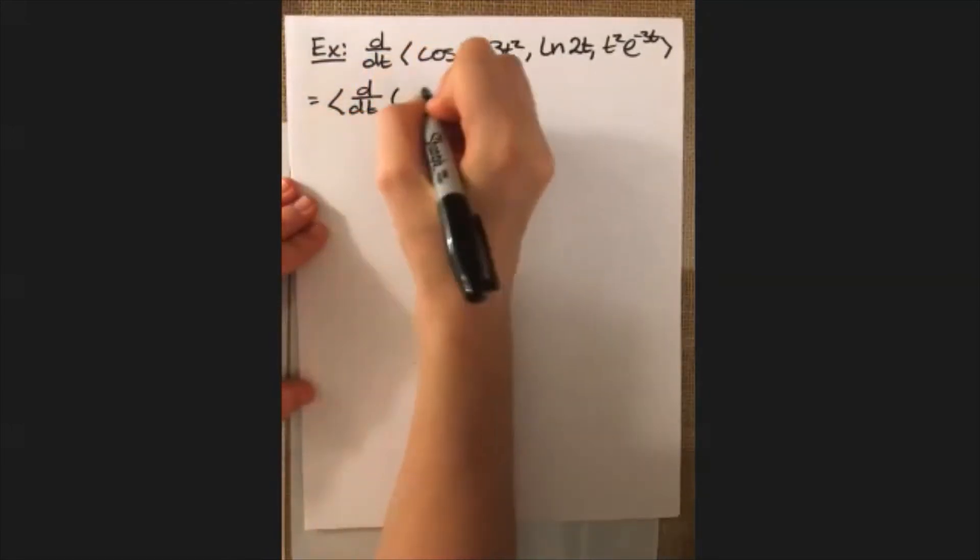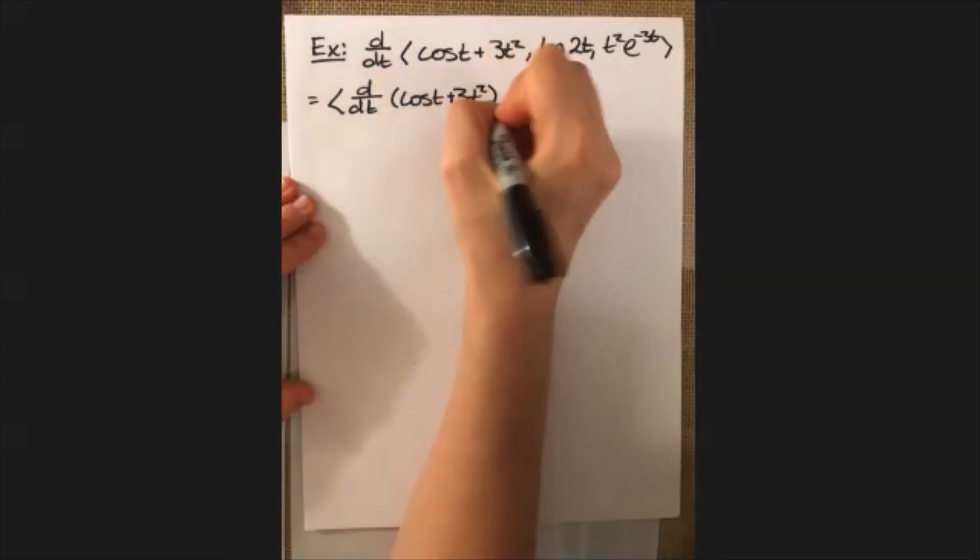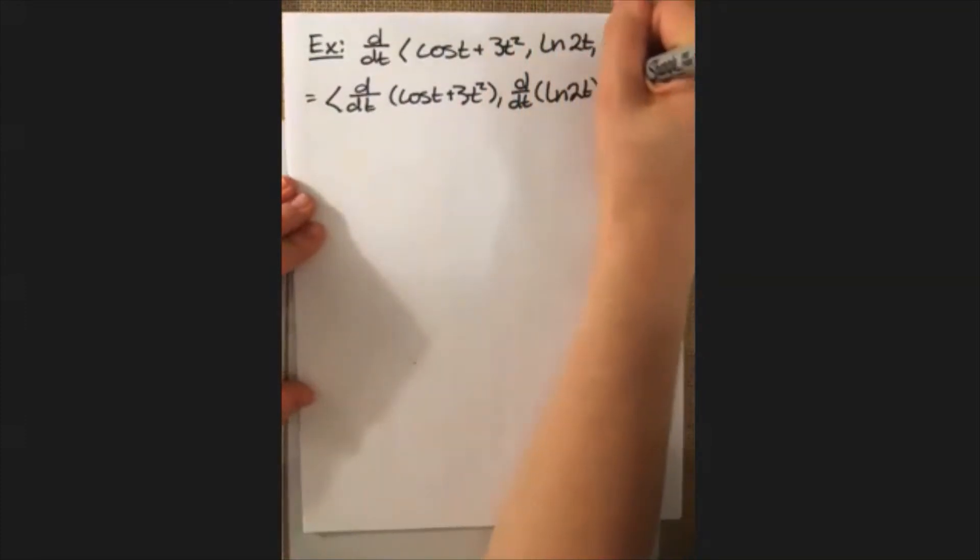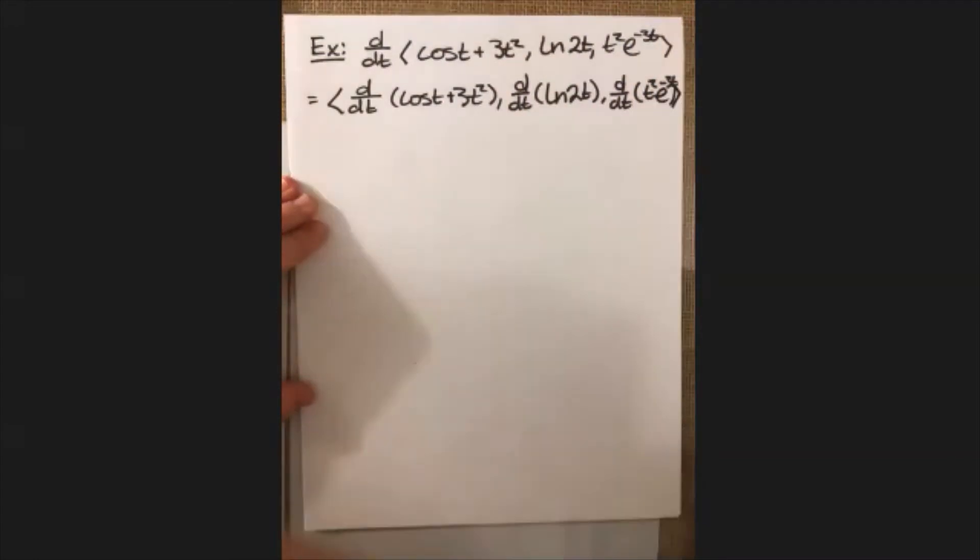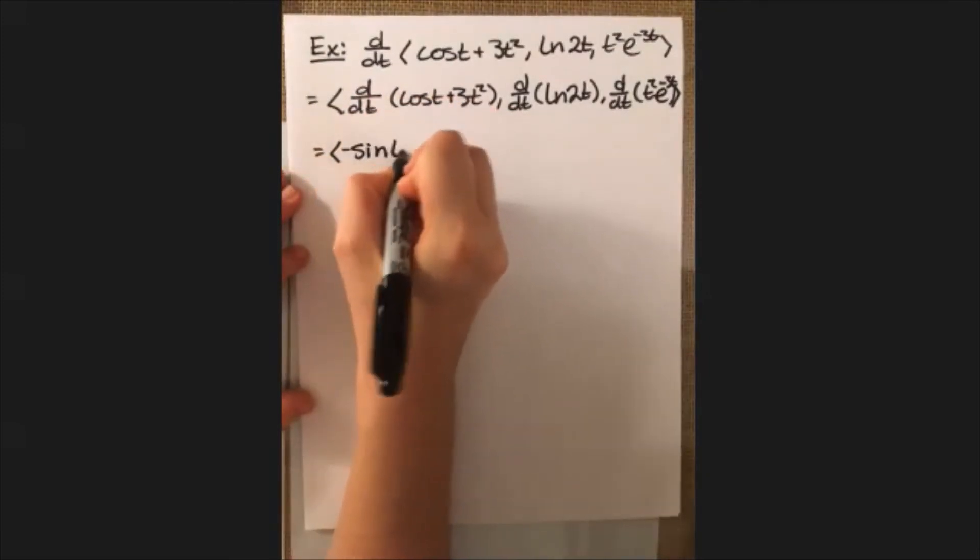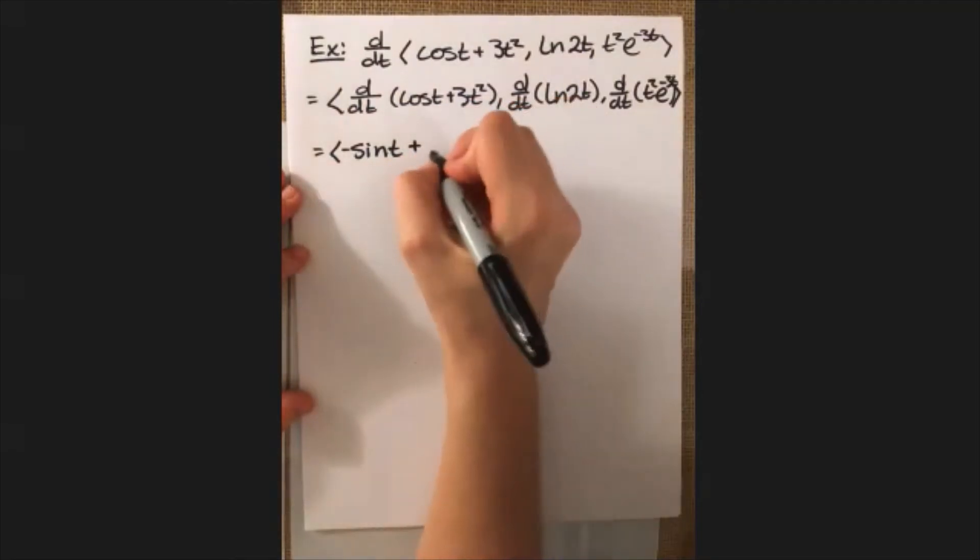So I'll write that out. We have d dt of cosine of t plus 3t squared, and then d dt of the natural log of 2t, and then d dt of t squared e to the negative 3t. So this piece right here, that's just equal to negative sine t plus 6t.